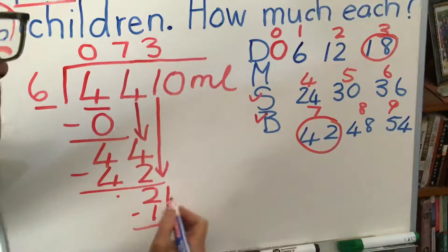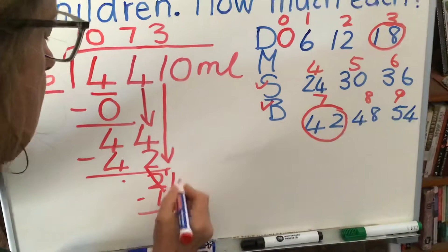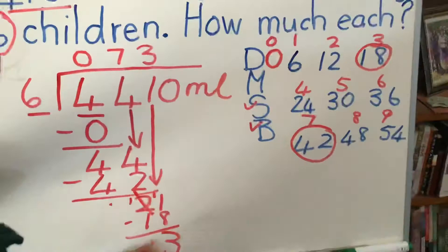So 8 from 1 can't go. We borrow 1. That becomes a 1. 11 minus 8 is 3. 1 minus 1 is 0. Bring down. Last number is 0 and it makes a 30.